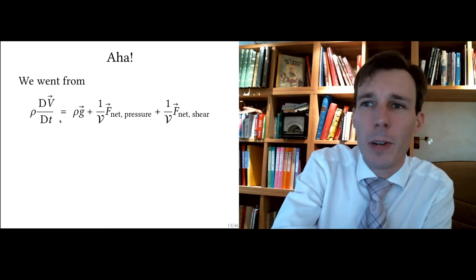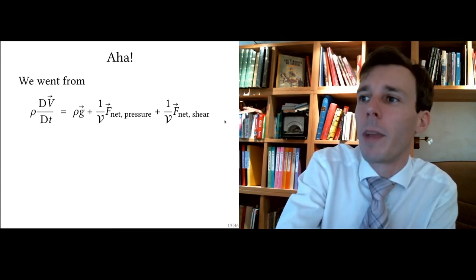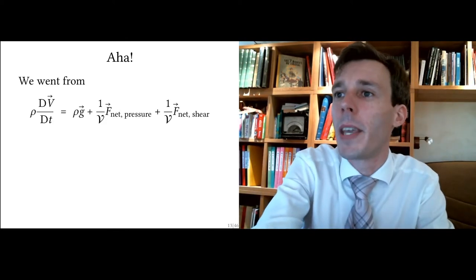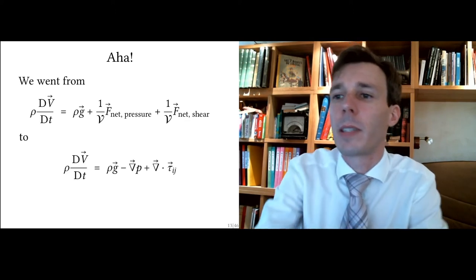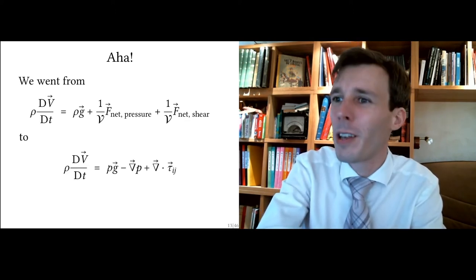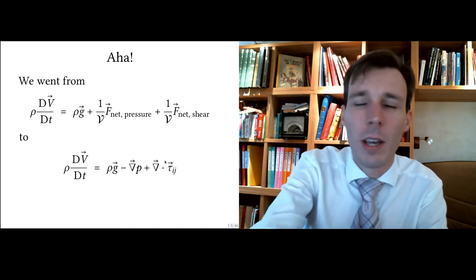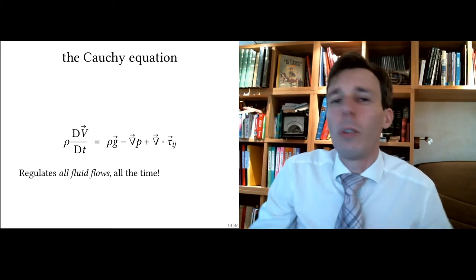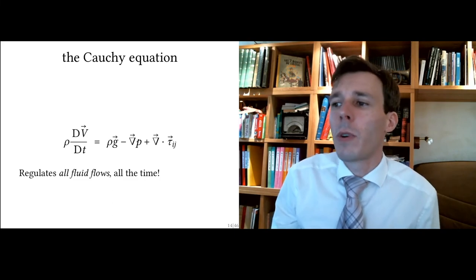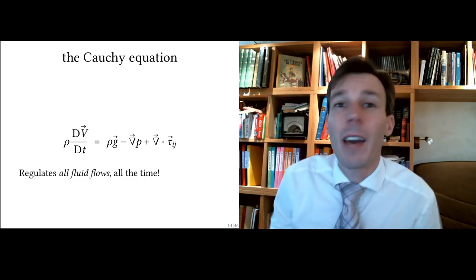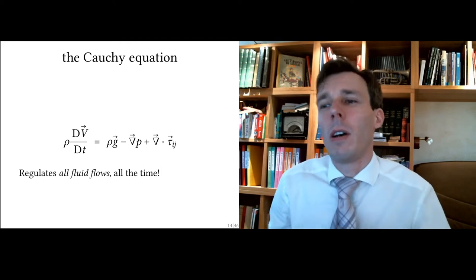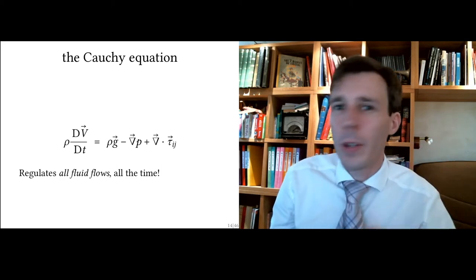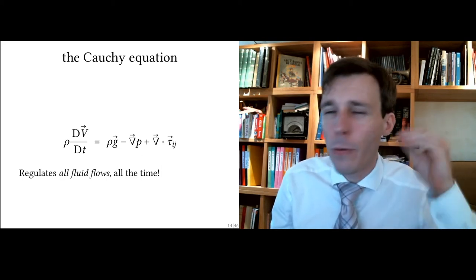Taking the puzzle pieces from previous chapters — mass times acceleration equals the sum of forces — and replacing the pressure and shear terms, we get: mass times acceleration equals gravity plus pressure plus shear. This is called the Cauchy equation, the overarching expression for the dynamics of every fluid in every possible situation: steady, unsteady, compressible, incompressible, Newtonian, non-Newtonian.